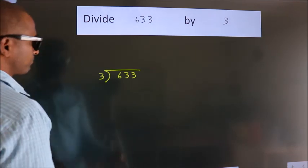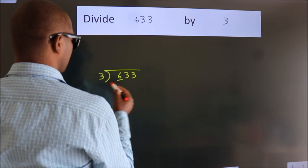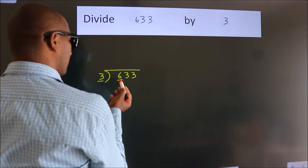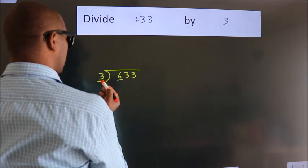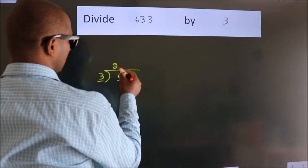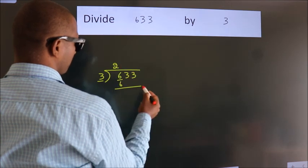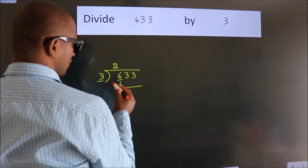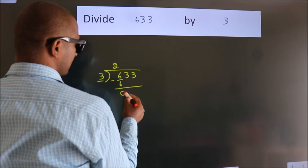Next. Here we have 6, here 3. When do we get 6? In 3 table. 3 times 2 is 6. Now we should subtract. We get 0.